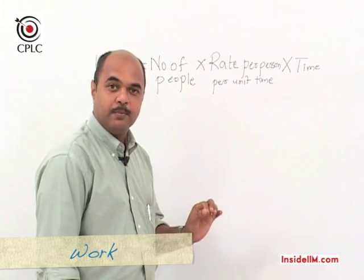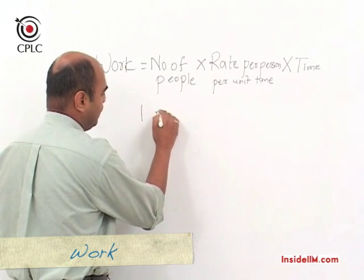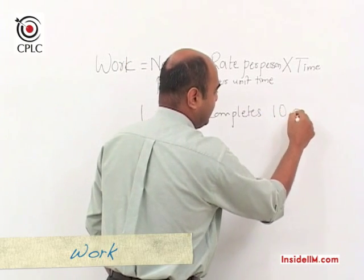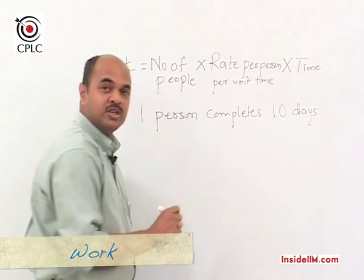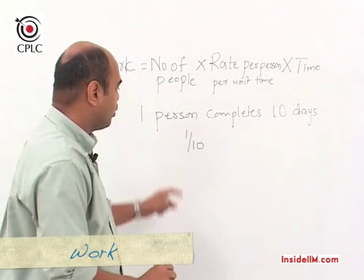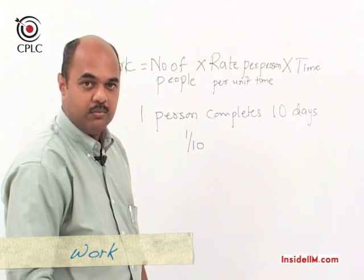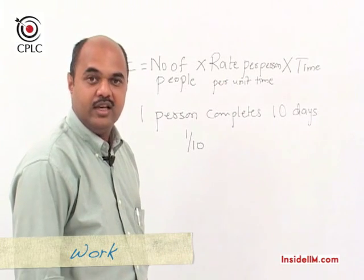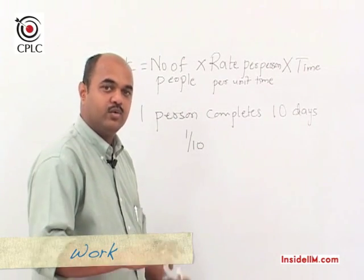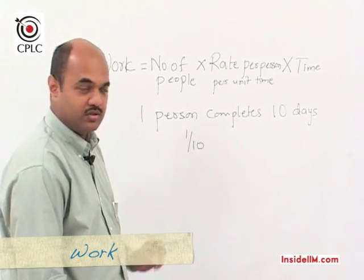If one person can complete a piece of work in 10 days, then the work done per day is 1/10. On the other hand, if the work done by a person on a daily basis is 3/5, then the number of days to complete the work would be 5/3 days. So we are just playing around with reciprocals here.